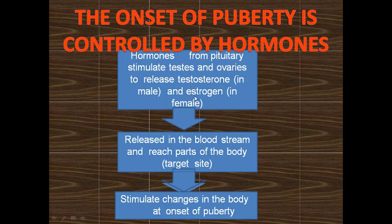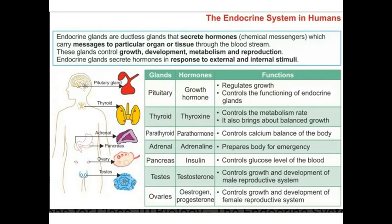Hormones from the pituitary stimulate testes and ovaries to release testosterone in males and estrogen in females. These are released into the bloodstream and then reach the target sites — different parts of the body — where they stimulate changes in those parts.